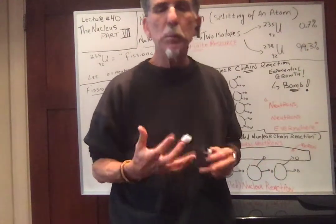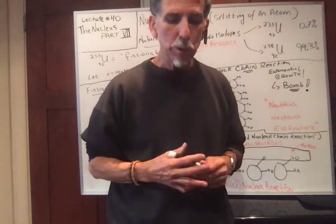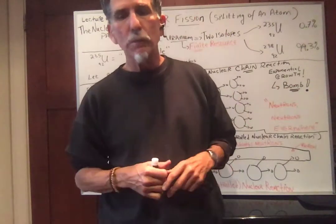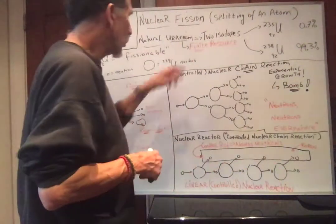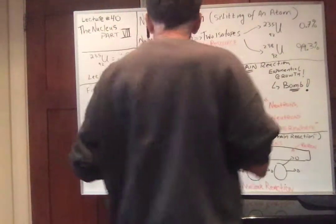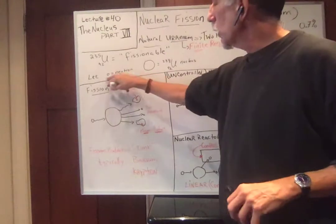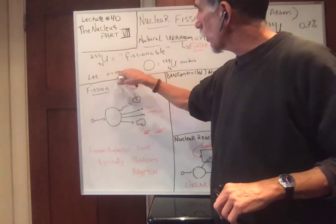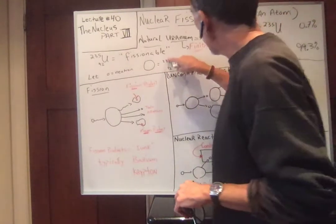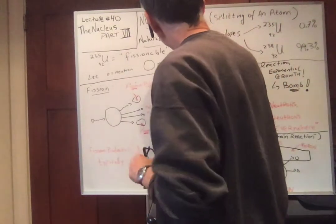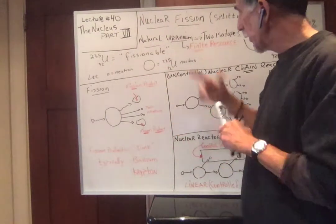Remember, uranium is a finite resource. If it's a finite resource and we can only use less than 1%, it's very, very limited — we'll talk about that problem later. So U-235 is the fissionable stuff. Now I'm going to draw a picture: a little circle will be a neutron and a big circle will be a U-235 nucleus, because that's the fissionable thing.